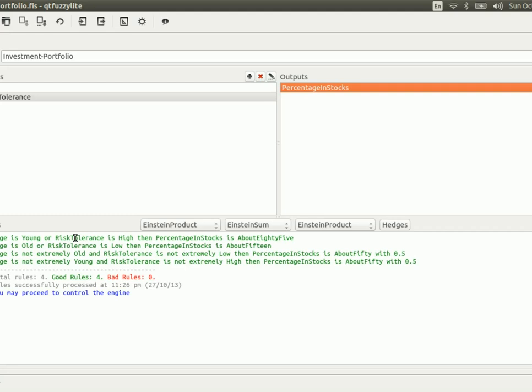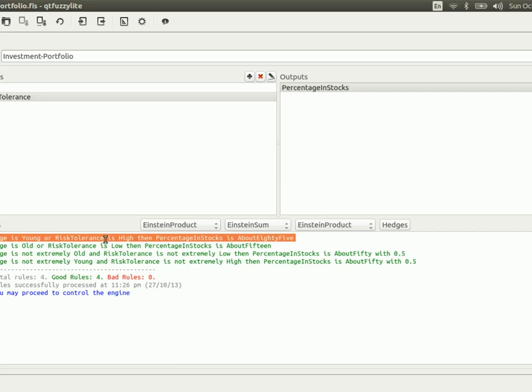Now, I'm not sure much of what this fuzzy logic controller does, but based on the rules, you can get an idea. So, if you're young, and you present a high risk, then the percentage in stocks is about 85. Now, otherwise, if you're old, and your risk is rather low, then the percentage of stocks is about 15. Now, this reminds me, this rule reminds me that another use of fuzzy logic controllers is in banking and insurance companies. So, a bank would decide how much money would they loan you, based on different variables, and an insurance company would decide how much the cost of your insurance policy would be based on other variables and rules expressed like this.